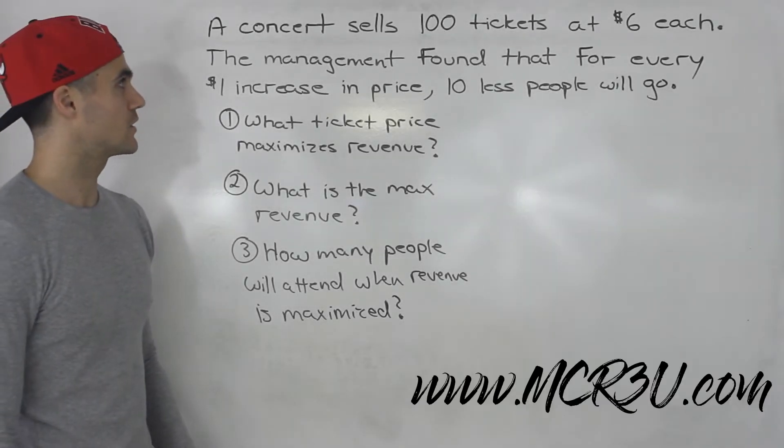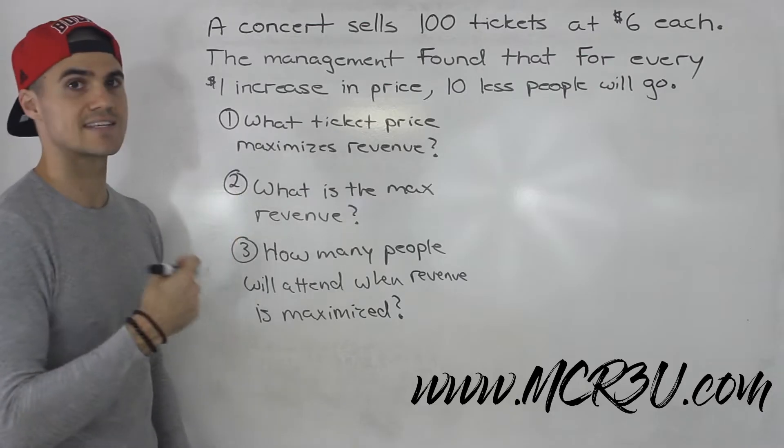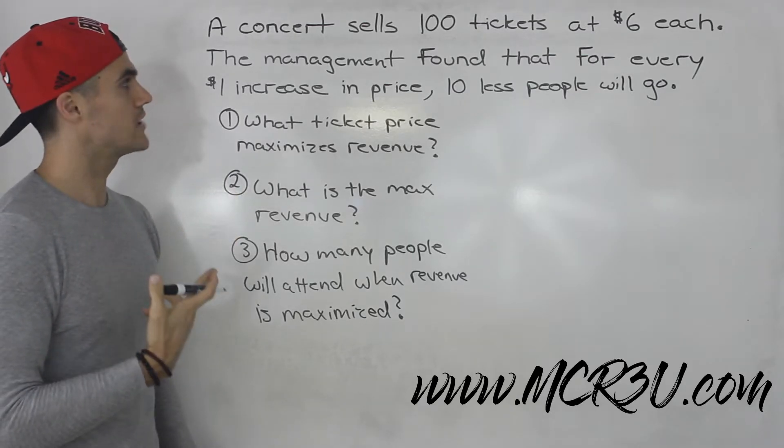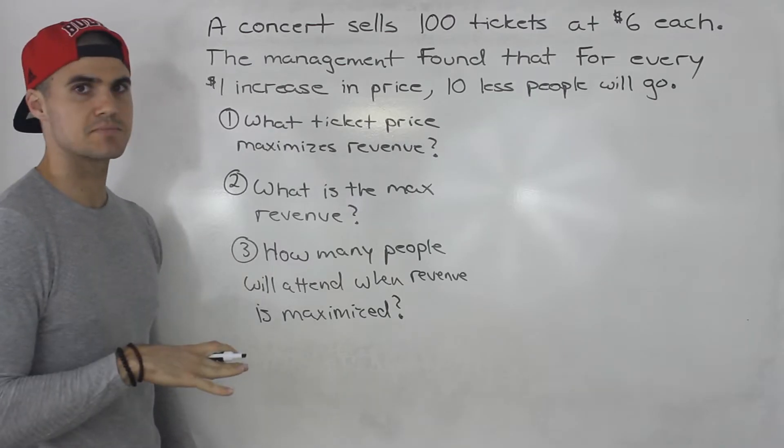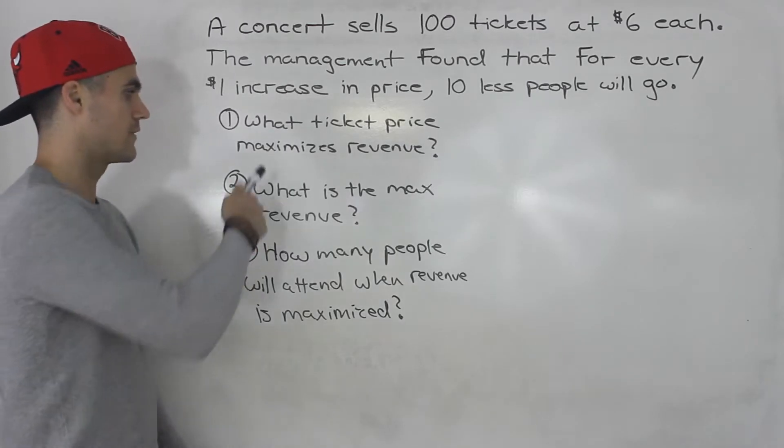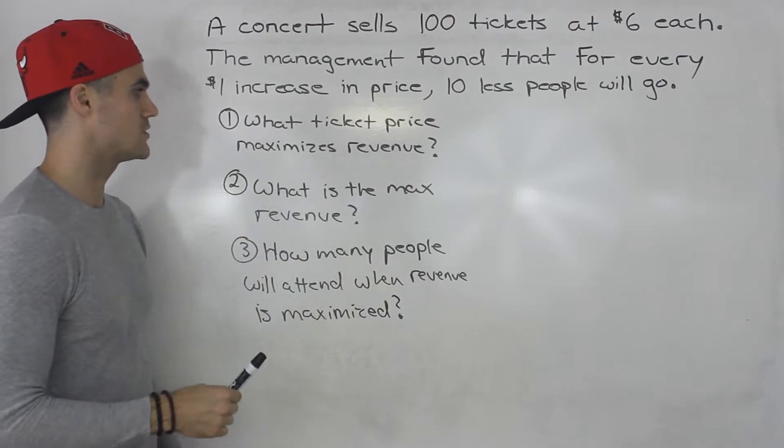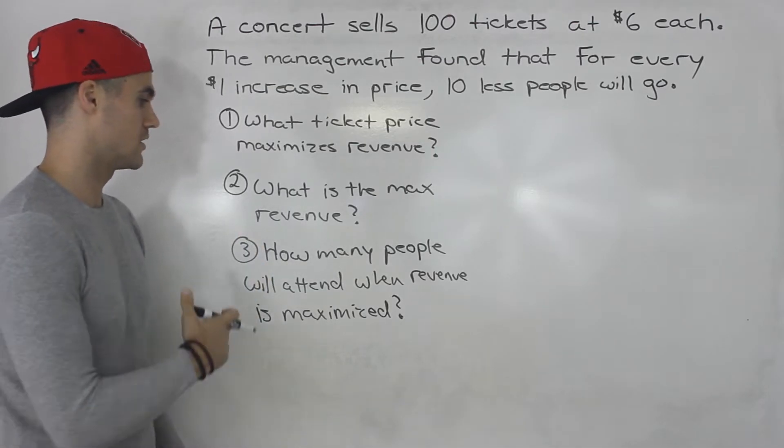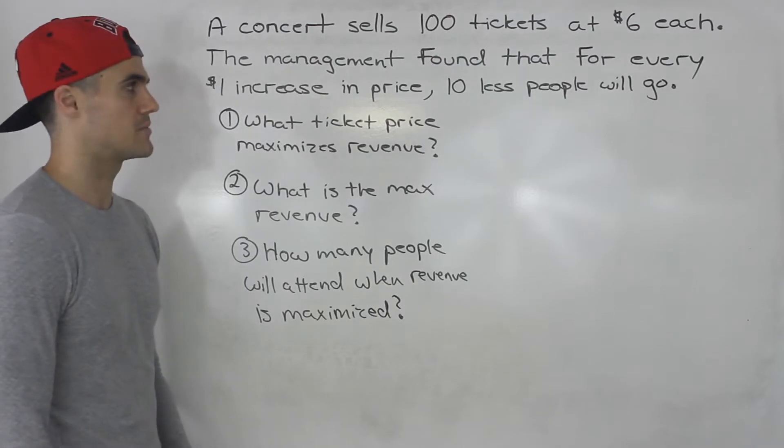Welcome back guys. In this video we're going to do a word problem. A concert sells 100 tickets at $6 each. The management found that for every $1 increase in price, 10 less people will go. We have to answer these three questions: What ticket price maximizes revenue? What is the max revenue? And how many people will attend when revenue is maximized?